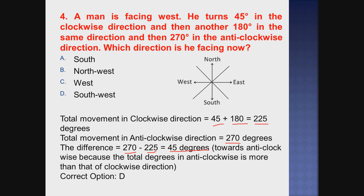Total movement - which direction has the majority? Whether anticlockwise is more than clockwise or vice versa. Anticlockwise total is 270 degrees; clockwise total is 225 degrees. So anticlockwise has the majority. Therefore the net result is 45 degrees in the anticlockwise direction.